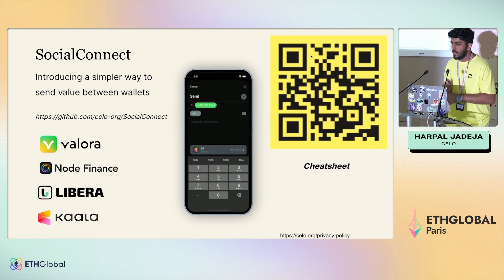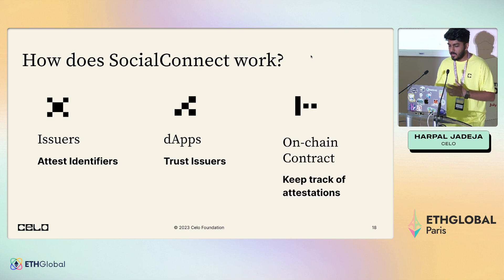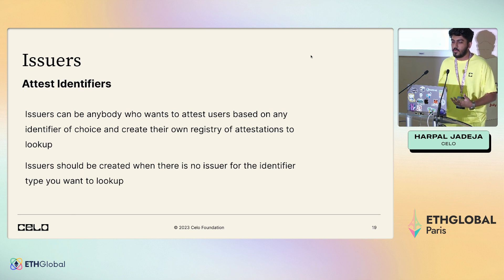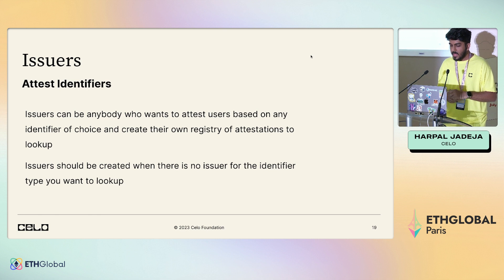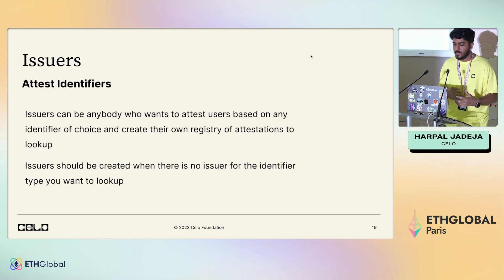Here's a cheat sheet — I highly recommend scanning the QR code, or grab a physical copy from Lyle in the Celo t-shirt. So how does Social Connect work? There are three parties: issuers, dApps, and an on-chain contract that tracks attestations. Issuers can be anybody who wants to attest users based on an identifier of their choice. For example, if I want users to use their Telegram handle as their wallet address, I can become an issuer for Telegram — no permission needed, it's open for all. You authenticate users, verify they hold the identifier, and store the obfuscated identifier on the smart contract on-chain, signed with your issuer keys.